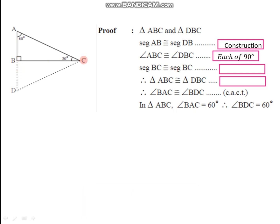Segment BC is congruent to segment BC as it is a common side for both triangles. So here we have two sides and the angle between them. That is why these two triangles are congruent by the SAS test. If these two triangles are congruent, then their corresponding angles are also congruent. So angle BAC corresponds to angle BDC, and these two must be congruent by the property of corresponding angles of congruent triangles.